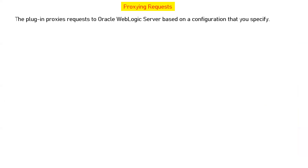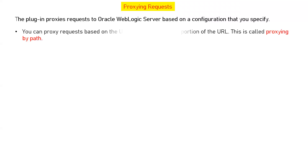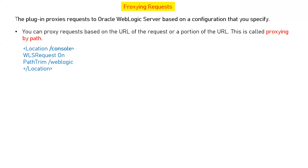When we talk about the proxying of requests — that means where you are forwarding your request — the plugin proxies requests to Oracle WebLogic server based on a configuration that you specify. You can proxy requests based on the URL of the request, or a portion of the URL — that is called proxying by path. For example, if you have a WebLogic server in the backend and you want to redirect traffic from your web server to the admin console, then you can define this parameter in your Apache or OHS configuration file with location as /console. This is called proxying by path.